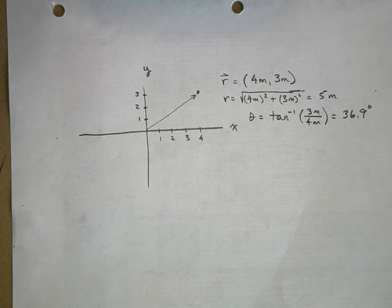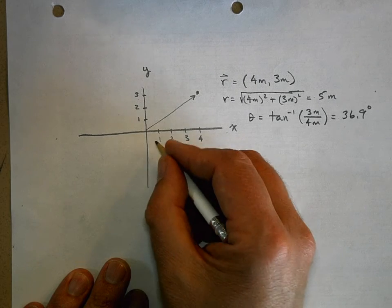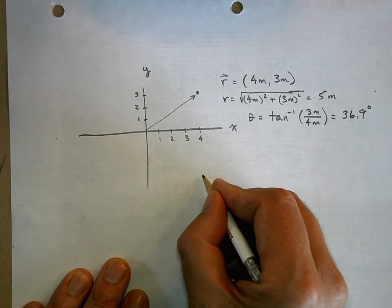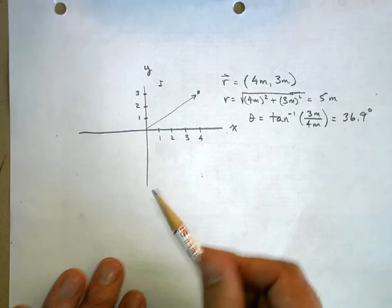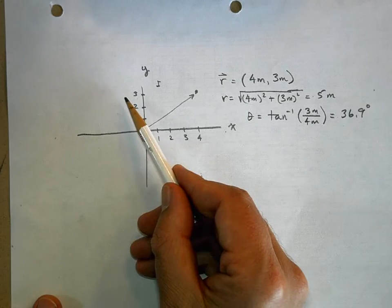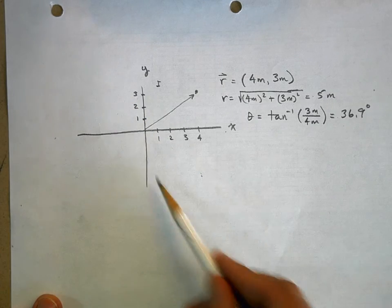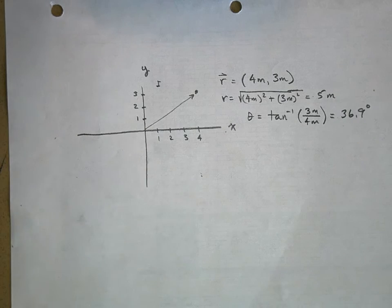But what if I was down here in the, now remember, this is called the first quadrant, and then over here is the second quadrant, this is the third, and this is the fourth quadrant. What if my object was in the fourth quadrant?